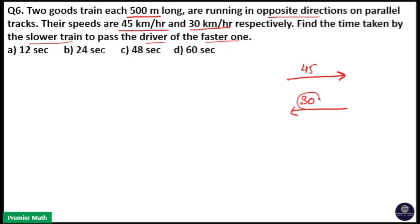Here is the driver in the front. So when the slower train passes this driver, it means it is covering the distance of the slower train. When the slower train passes the driver of the faster train, it covers the distance of the slower train.